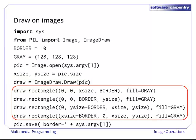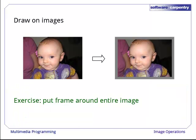Now that it has a drawing tool, the program can create four rectangles, each 10 pixels wide along one border of the image, and then save the modified picture. As you can see, the result is a framed version of our original picture.